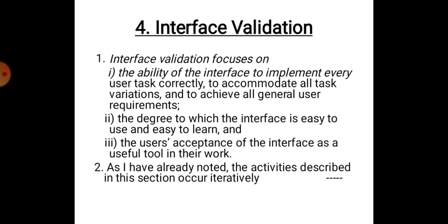The last phase in the spiral model is Interface Validation, which focuses on three topics: the ability of the interface to implement every user task correctly and accommodate all task variations; the degree to which the interface is easy to use and easy to learn; and the user's acceptance of the interface as a useful tool in their work. The activities described in these sections occur iteratively, as in the spiral model.